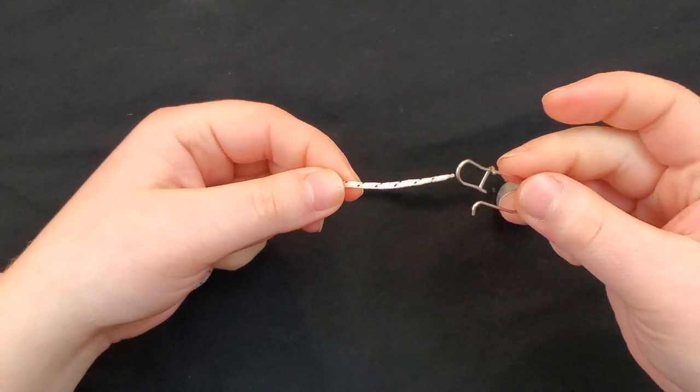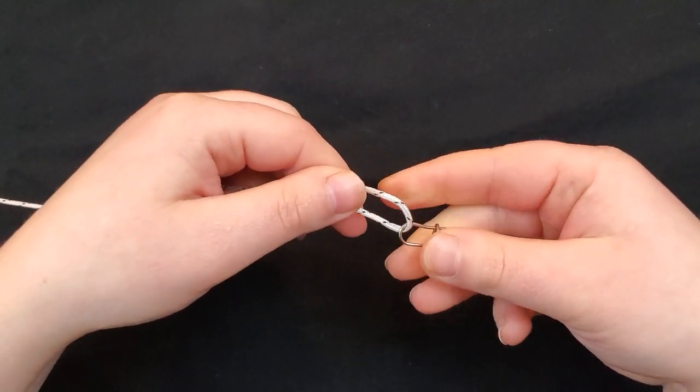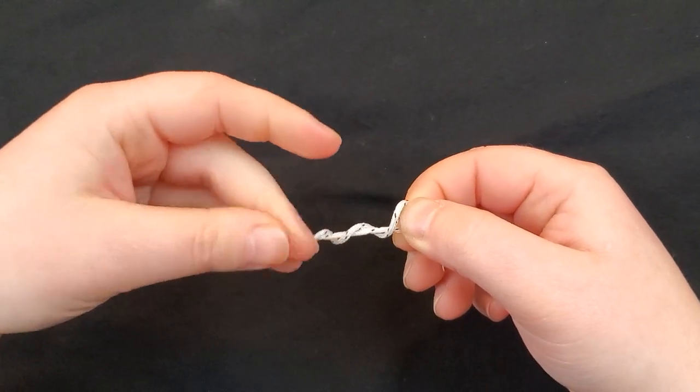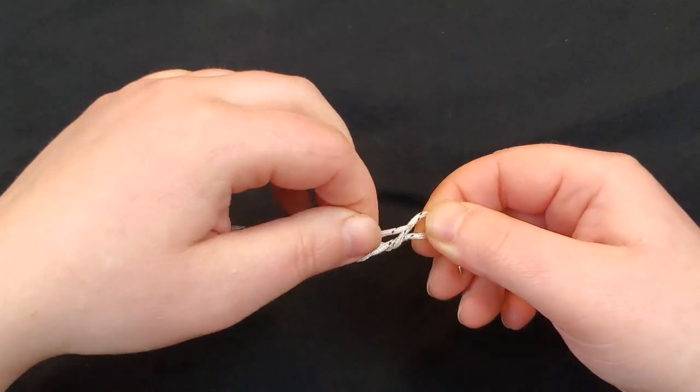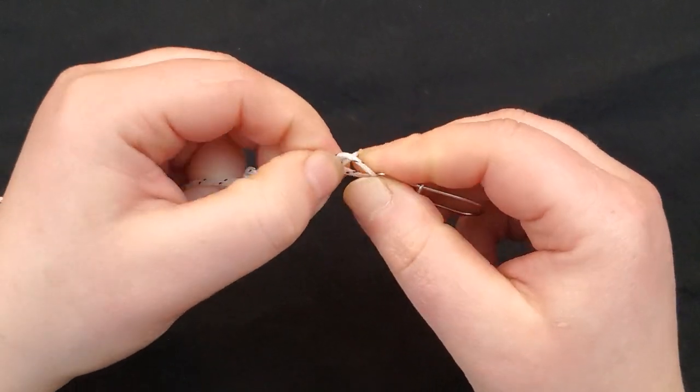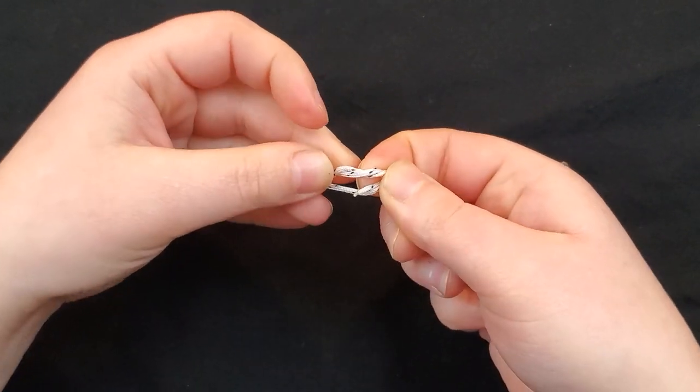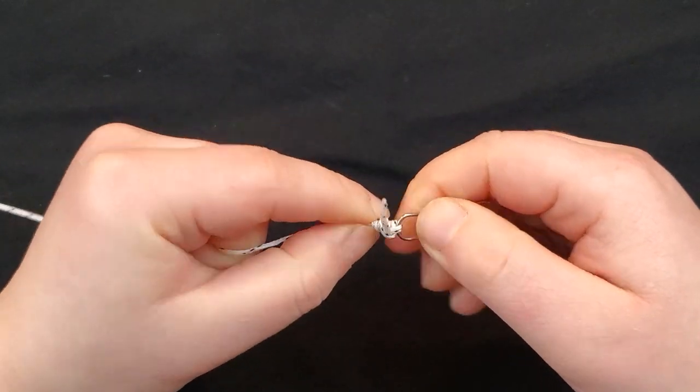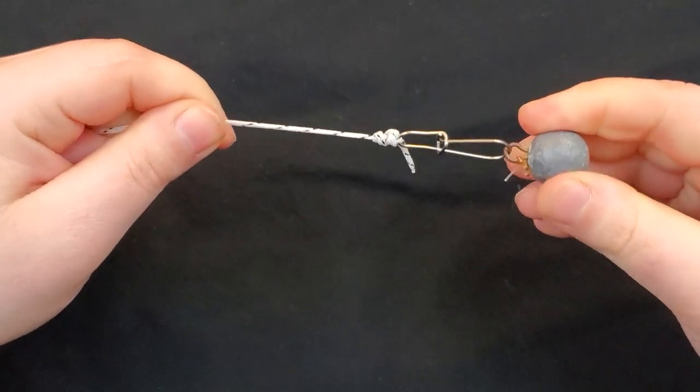So we take our line, go through the snap, and then we're going to leave a little bit of a loop right here at this end and pull this line around. Then you're going to take your tail and go through that opening. That looks like that, and then you go back through that loop.